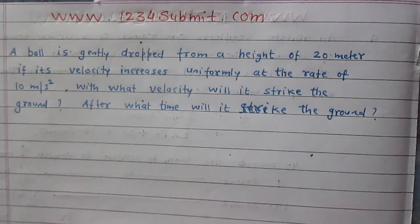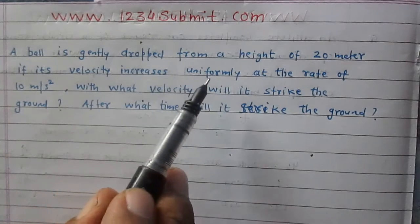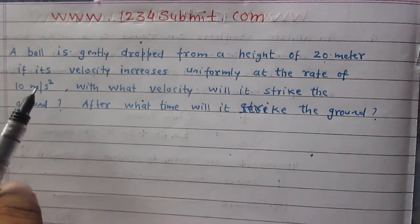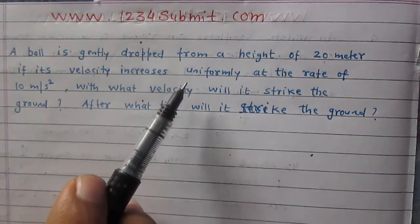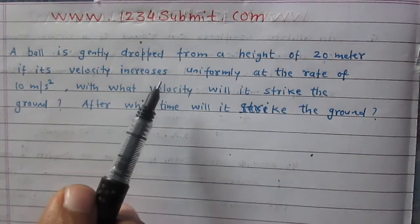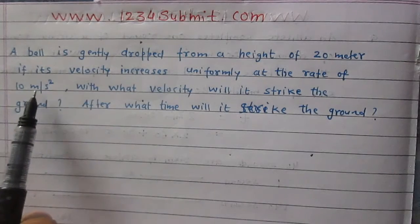From a height of 20 meters, if its velocity increases uniformly at the rate of 10 meter per second square, then 10 meter per second square is the rate of change of velocity, so it is an acceleration.